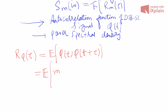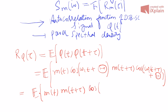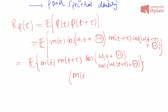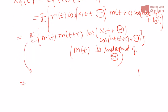By definition, R_phi of tau is the expected value of phi(T) * phi(T + tau), which equals the expected value of M(T) * cos(omega_C * T + theta) times M(T + tau) * cos(omega_C * (T + tau) + theta). This equals the expected value of M(T) * M(T + tau) times the cosine terms. One important assumption here is that the message signal process M of T is independent of the phase theta. This assumption is important because only then can we separate the expectations — the expected value of X*Y equals expected value of X times expected value of Y if X and Y are independent.